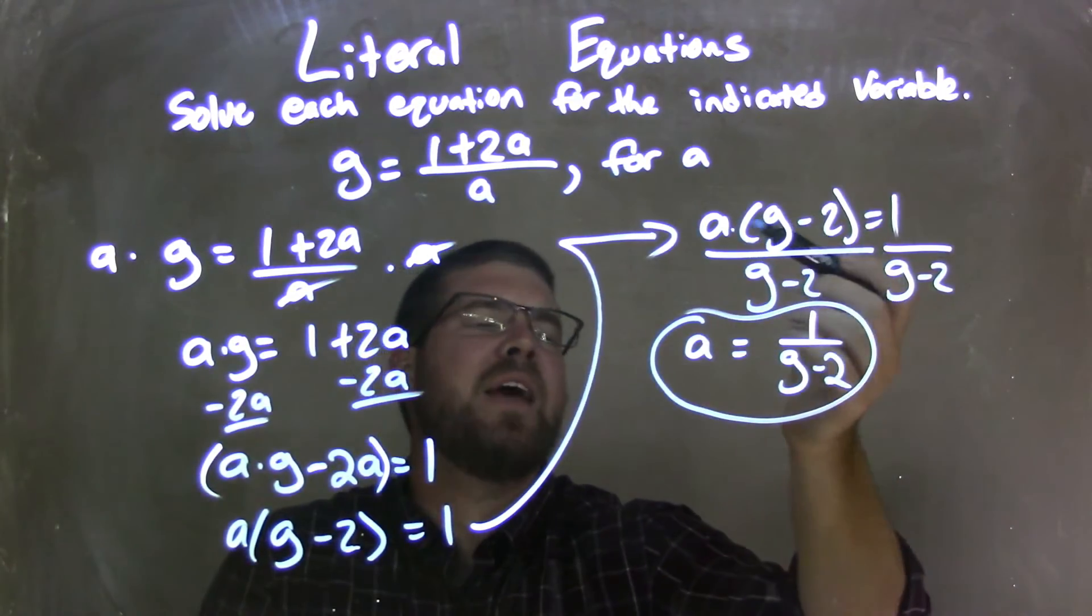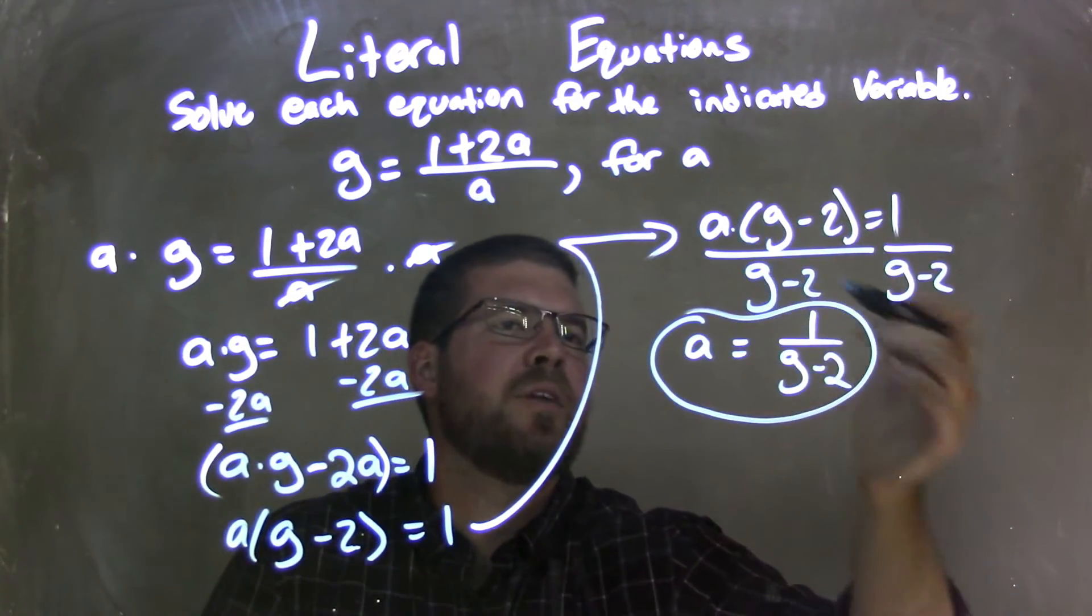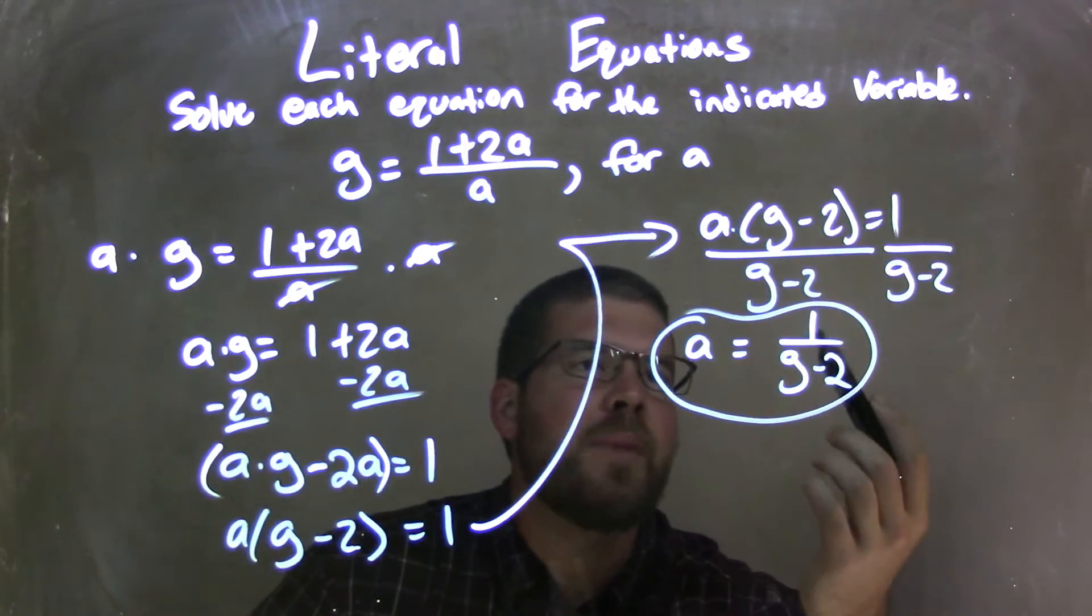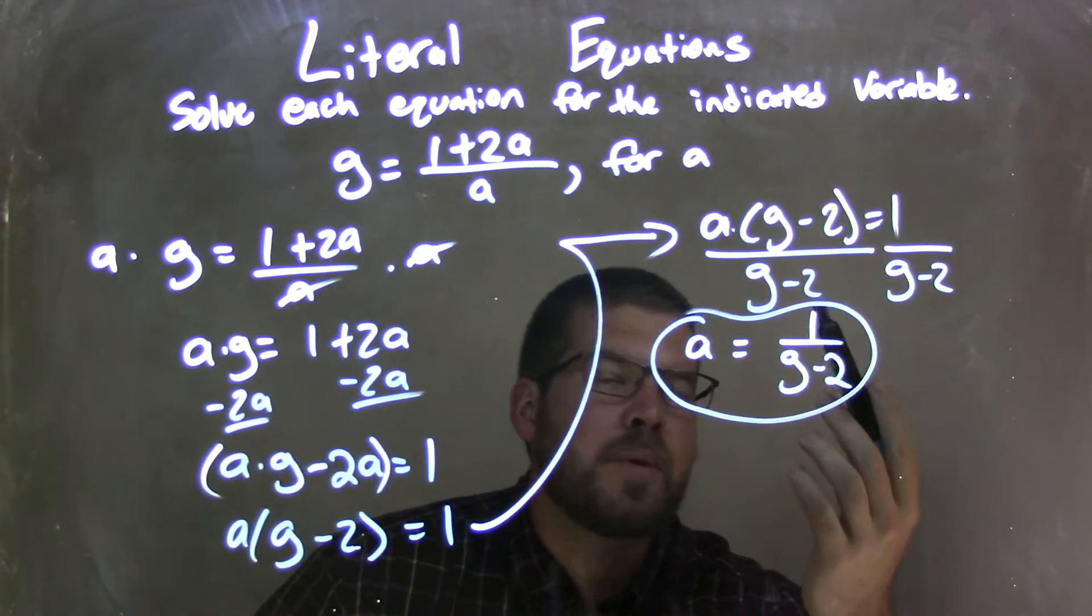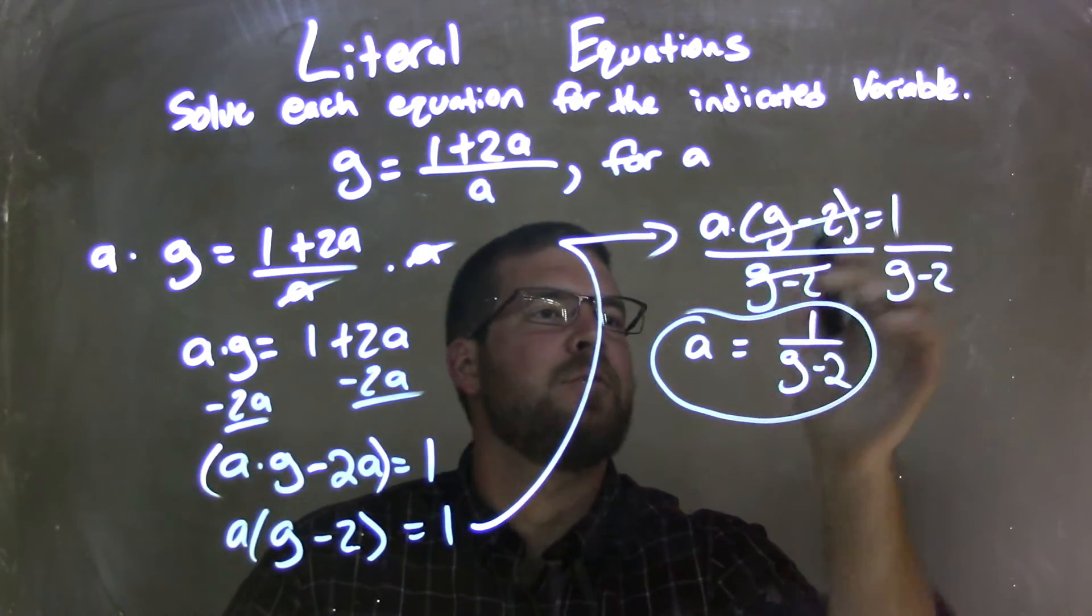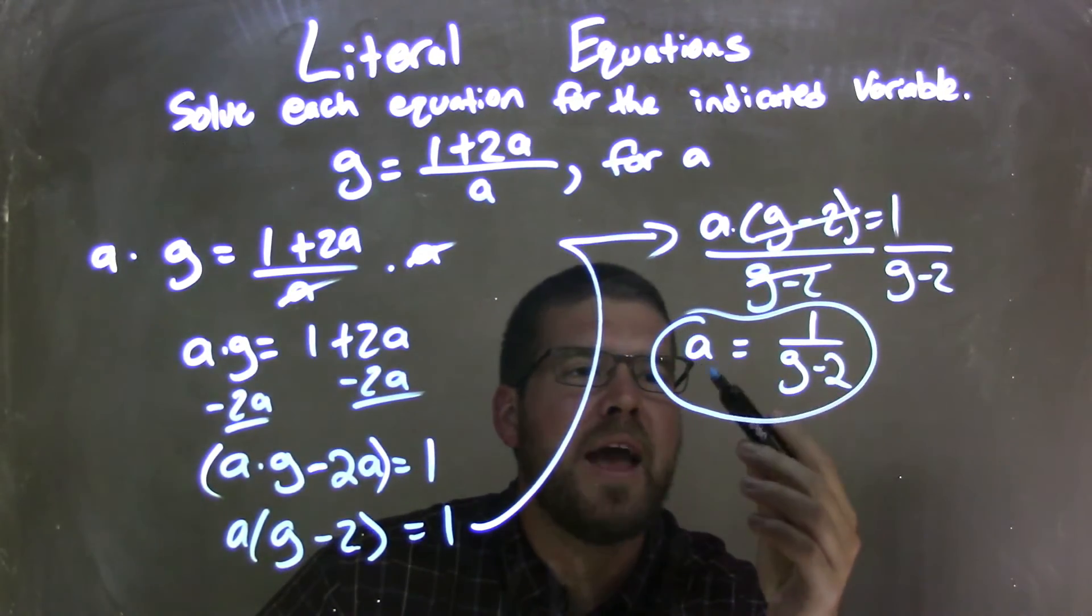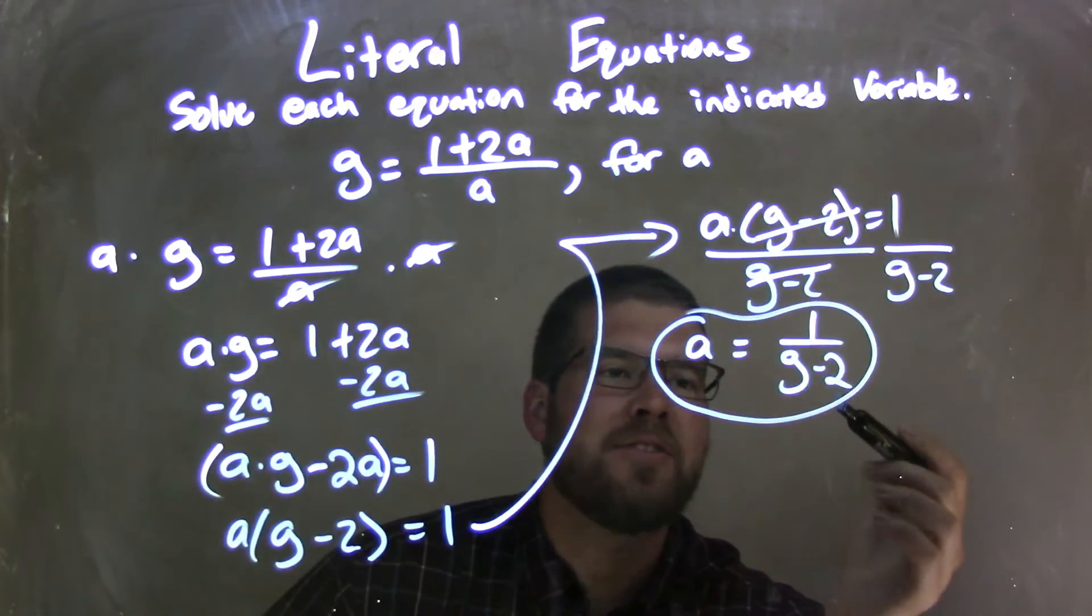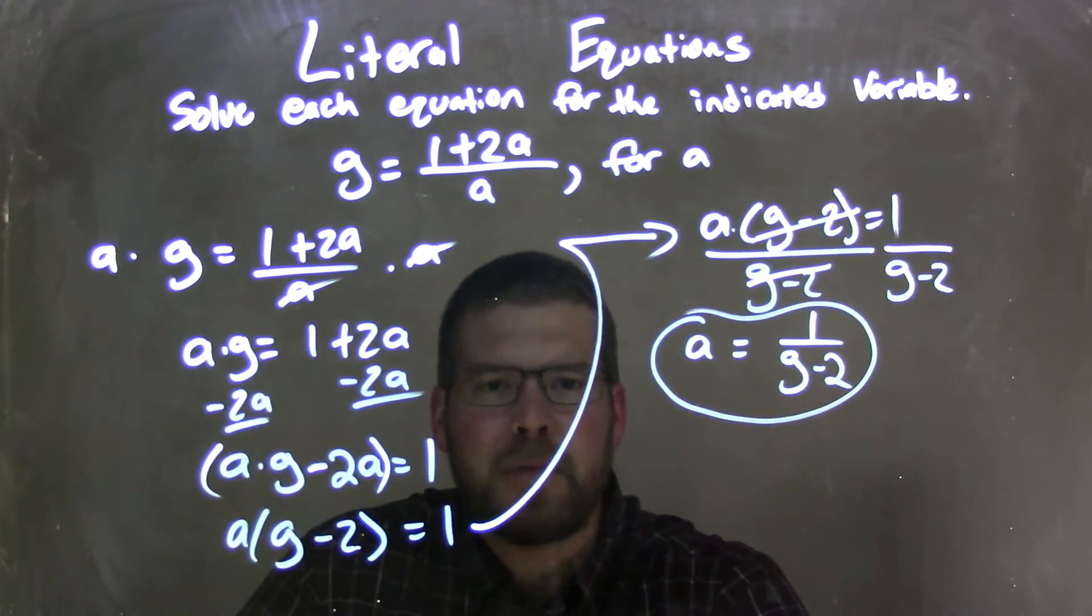I then rewrote it up here, but then I had to divide by g minus 2 to both sides because of multiplication. So by doing that, the opposite of multiplication is division. By doing that, I had a isolated by itself. These g minus 2 will cancel, leave me with a equals 1 over g minus 2, which is my final answer.